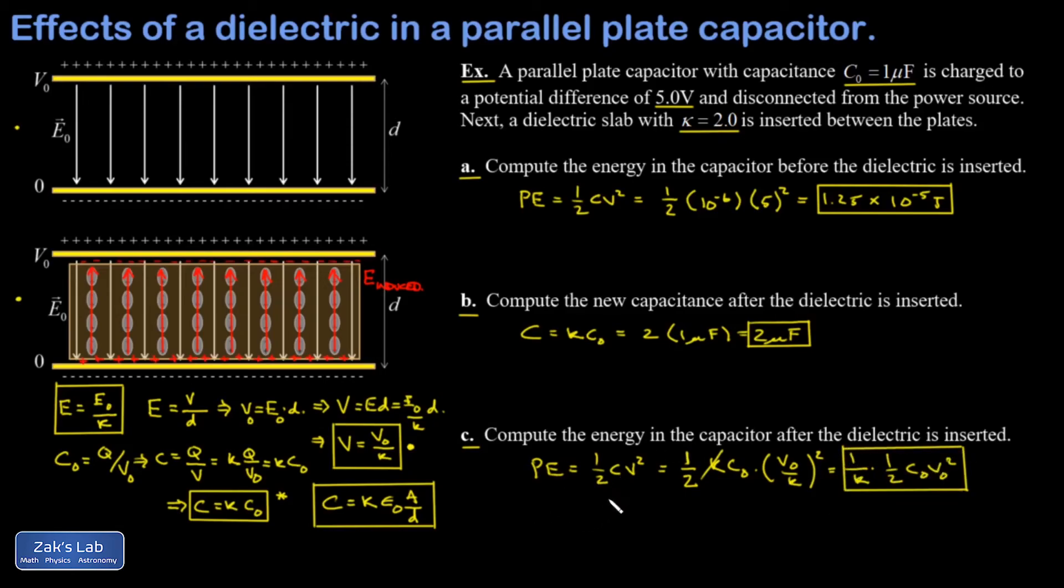Okay, so all I have to do then is insert kappa equals two, and I see that I get one half the original potential energy. I guess I could call that PE naught, I'll change it in part a.